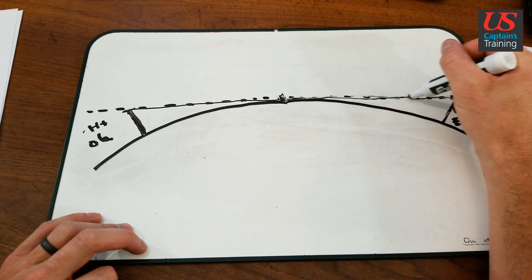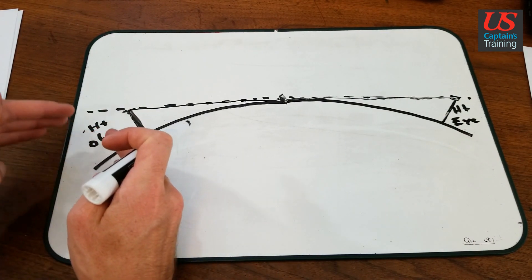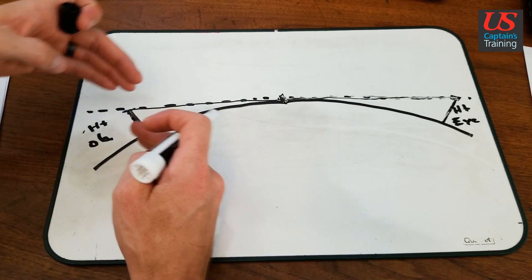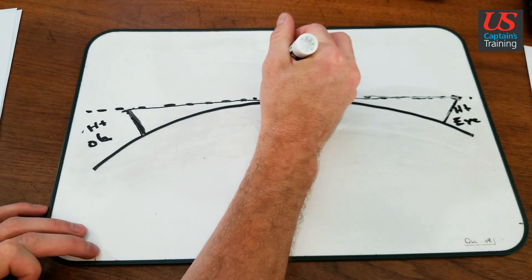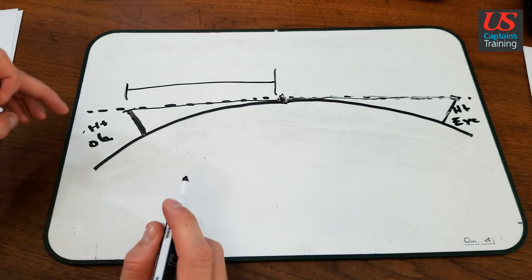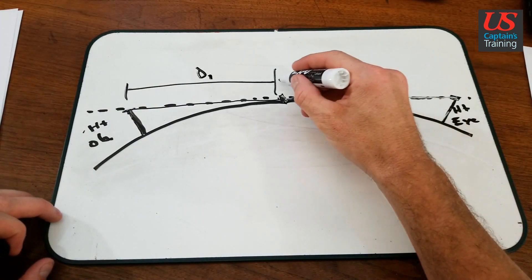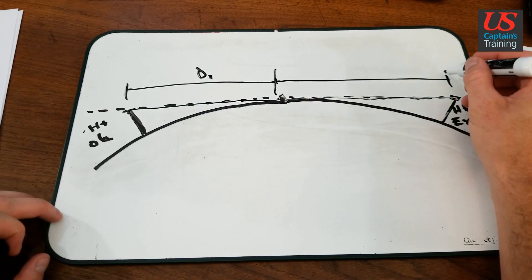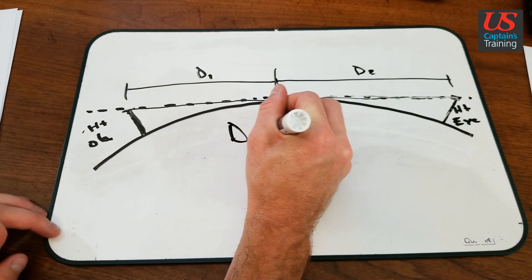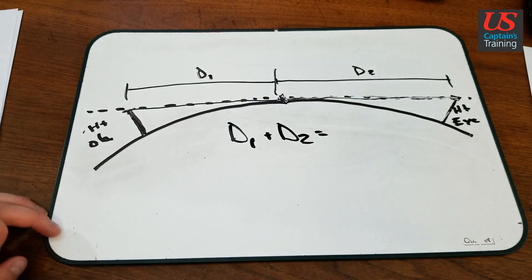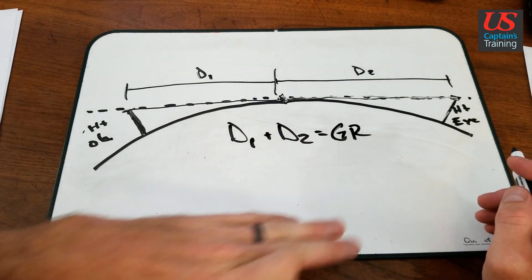The same applies to the height of the eye — the higher your eye, the further you can see before the horizon gets in the way. So what we're taking is the height of the light or object and the height of your eye that you're trying to see the light with, and we're going to add those two up. The height of the light has a certain distance to the horizon, and the height of eye to the horizon has another, and we just add those up: d1 plus d2 equals geographic range.